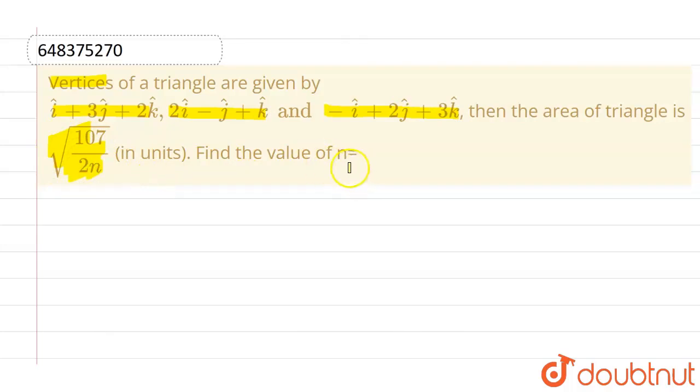So from here, we have to compare the area of triangle and find out the value of n. If we are given with the vertices, let us suppose this is the triangle and the position vector of these three vertices are given.